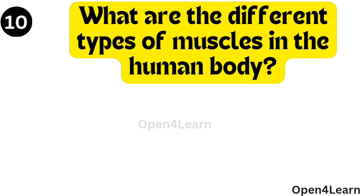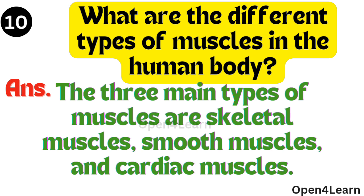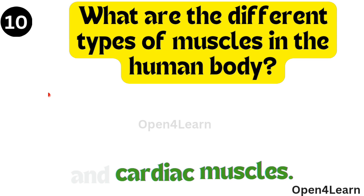Question, what are the different types of muscles in the human body? Answer, the three main types of muscles are skeletal muscles, smooth muscles and cardiac muscles.